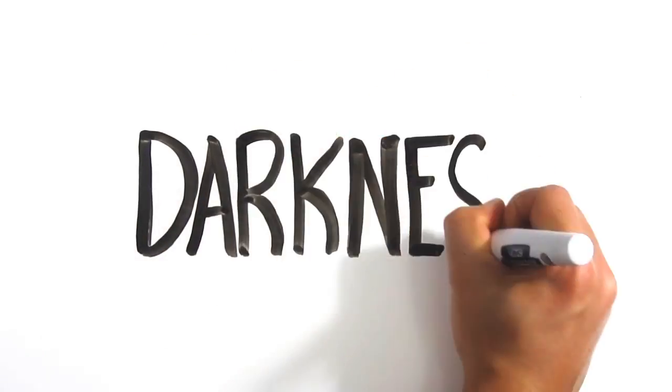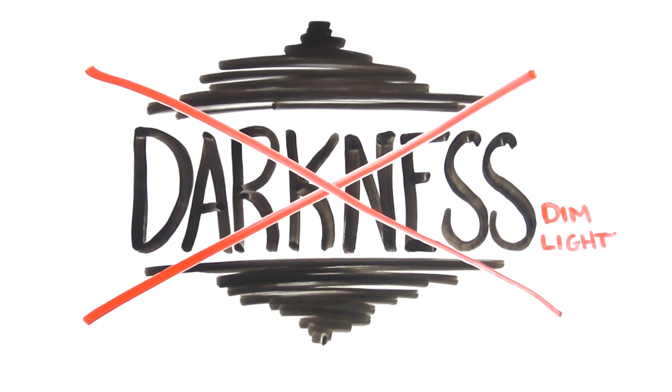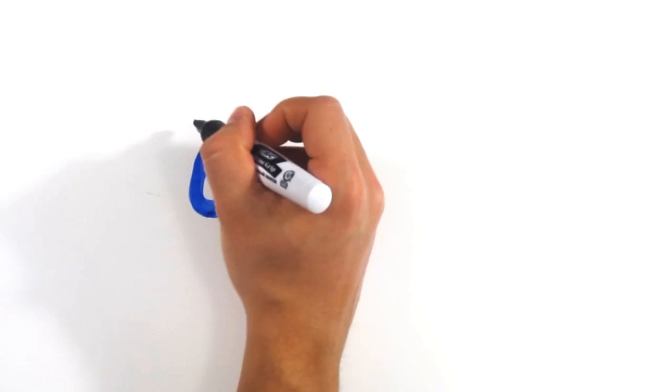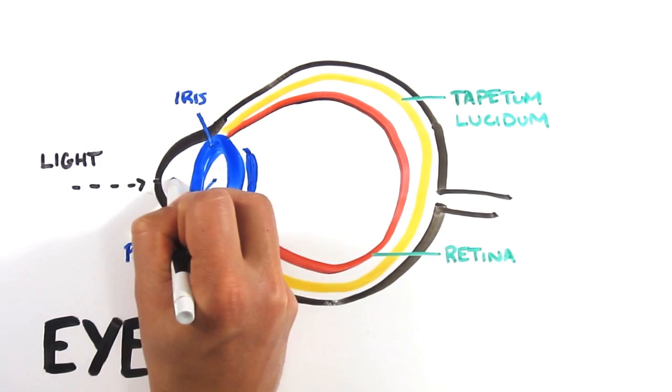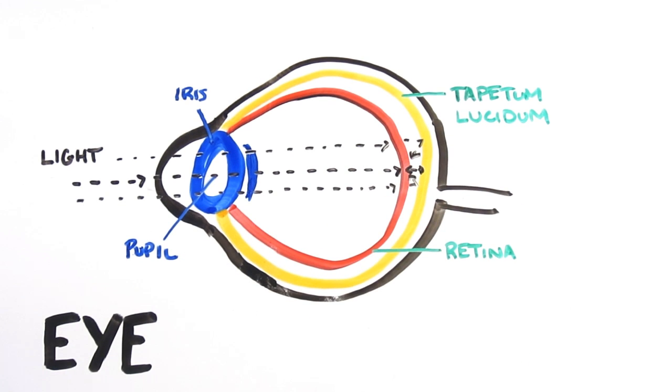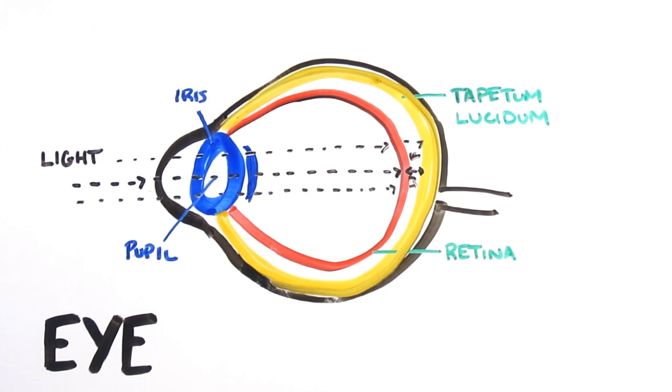Also, in complete darkness, cats can't actually see. They can see much better than you and I in dim light. Cats have a layer of cells behind the retina called the tapetum lucidum, which acts like a mirror reflecting extra light back at the retina. In near darkness, this gives their eyes a second chance to pick up more light, but without any light present, they can't see any more than we can.